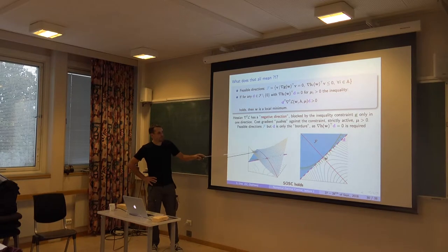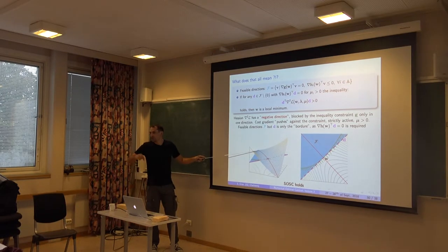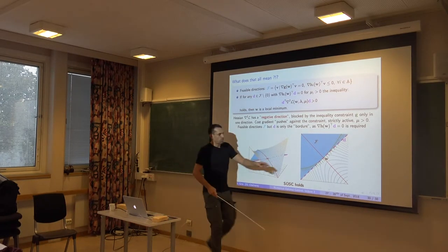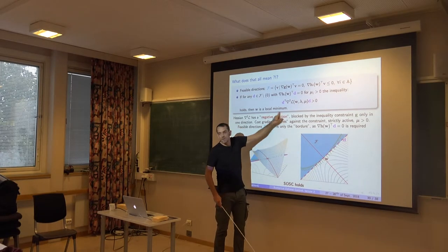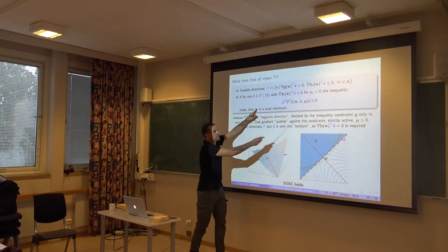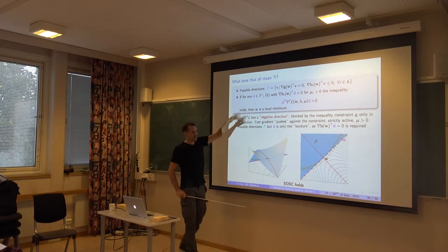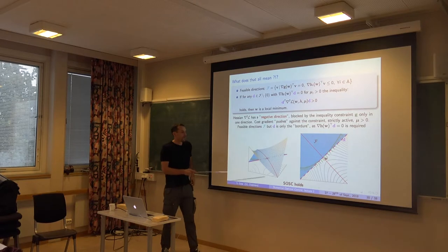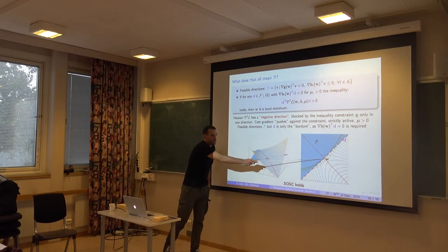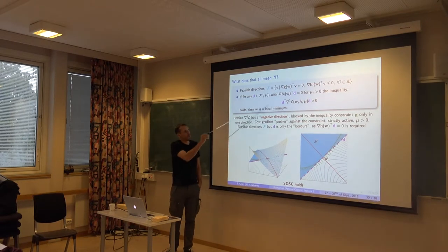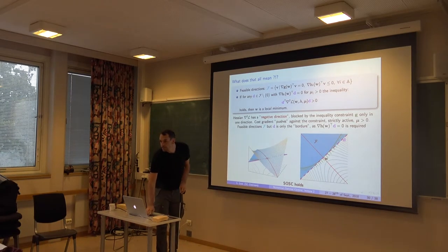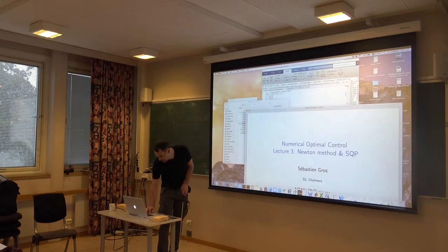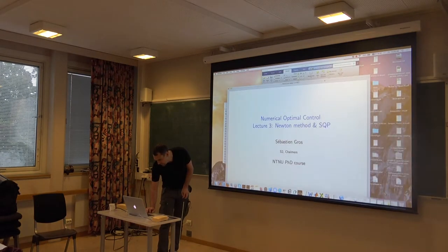So in theory, the true minimum of that problem is actually unbounded. It's minus infinity, because I can move away from that constraint as much as I want and beyond this saddle point, it's all going down here. So if there is no other constraint up here that blocks me, I could do that. So again, now we are always discussing local minima and we can analyze the conditions there. Okay with that?